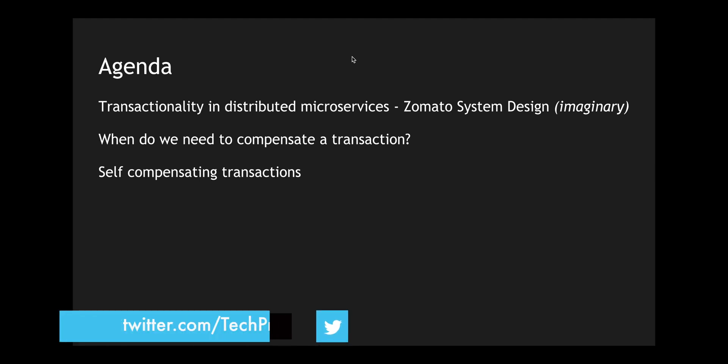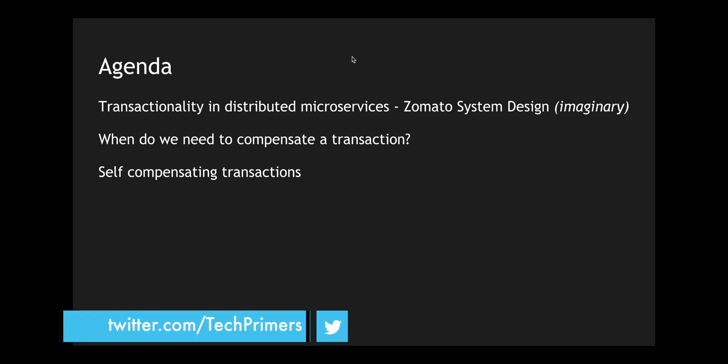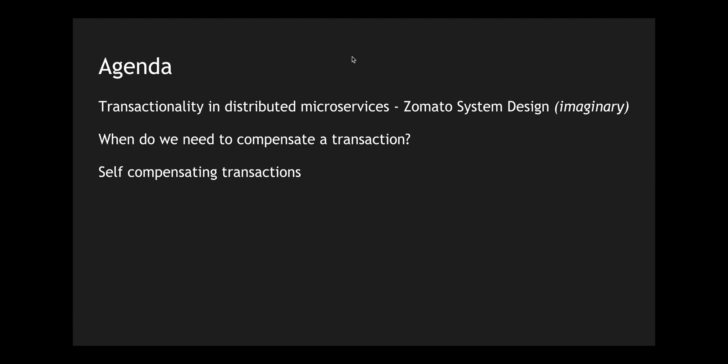In this video we are going to see how we can use transactionality in distributed microservices. We are going to take an example of Zomato, look at why we need a compensating transaction in a saga event-driven architecture, and finally see how we can develop self-compensating transactions within the same architecture.